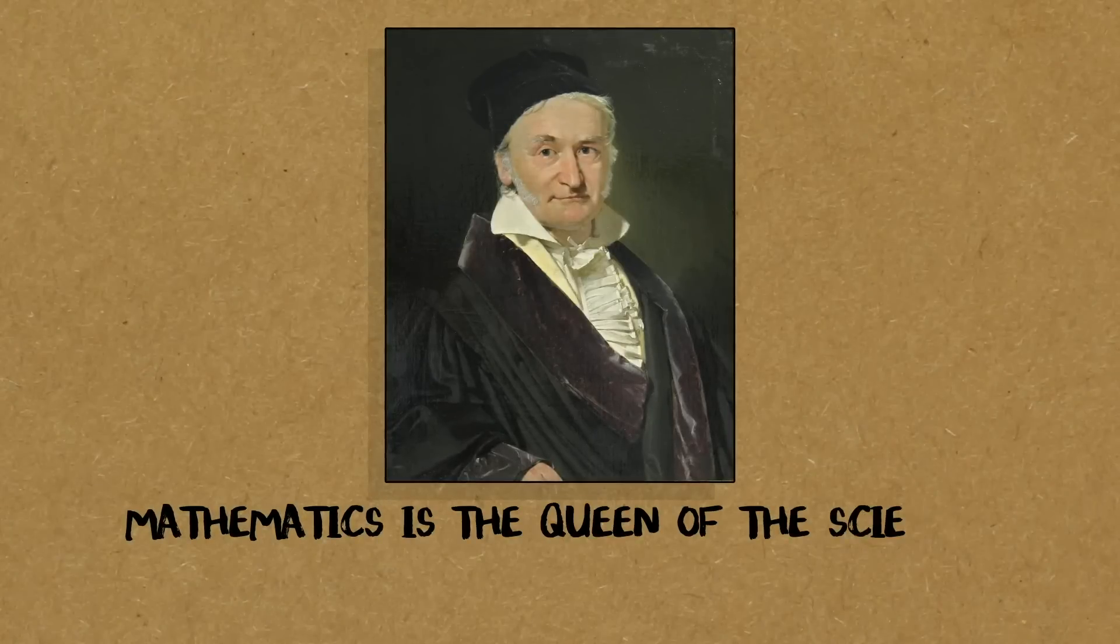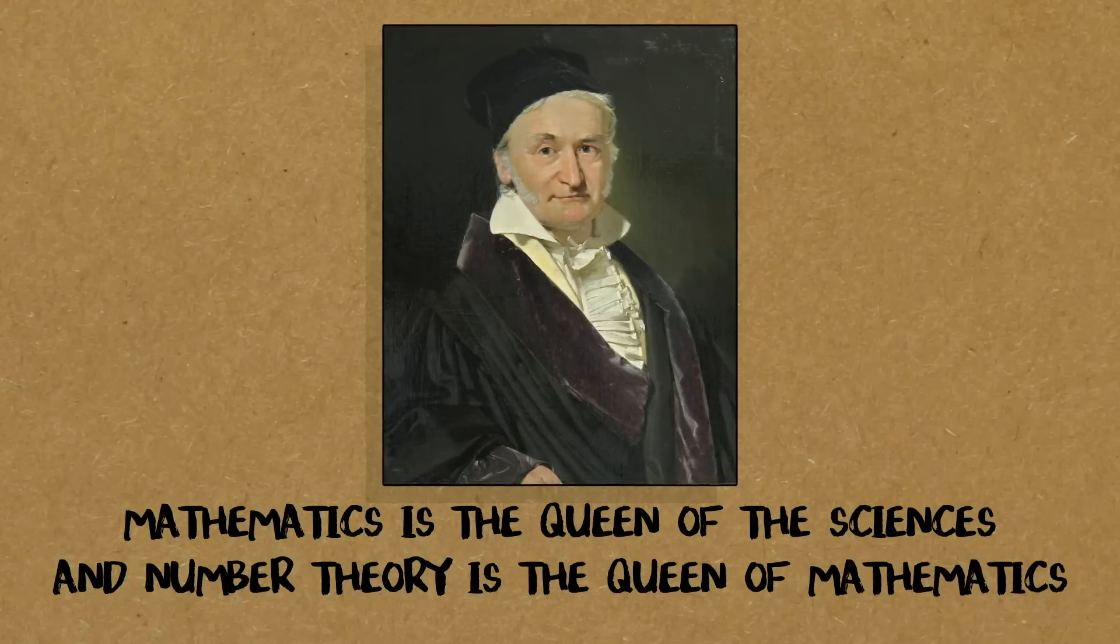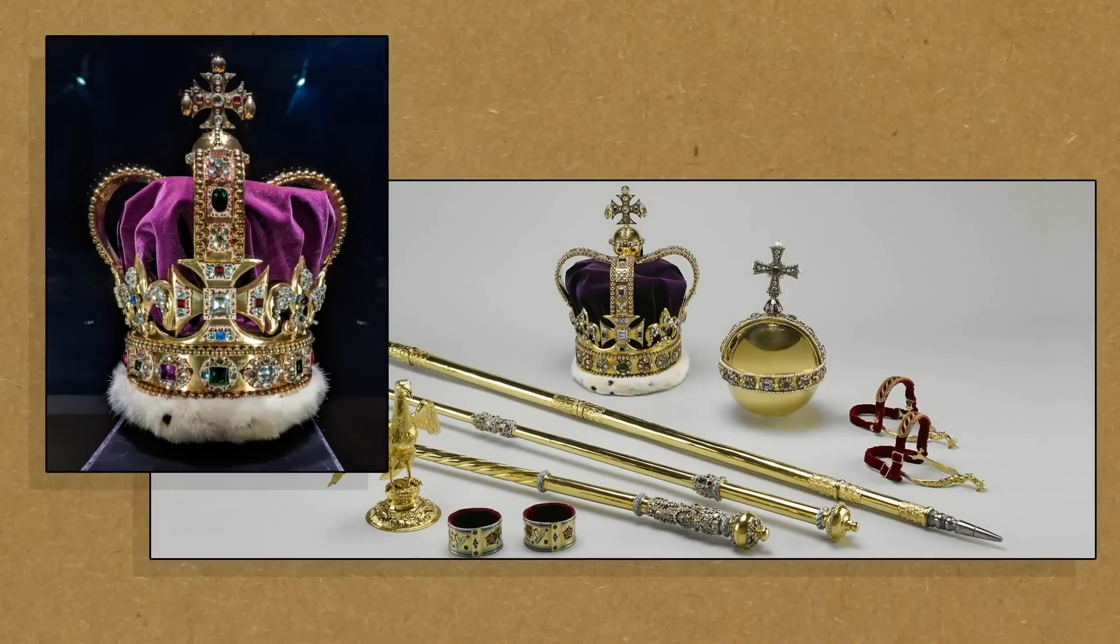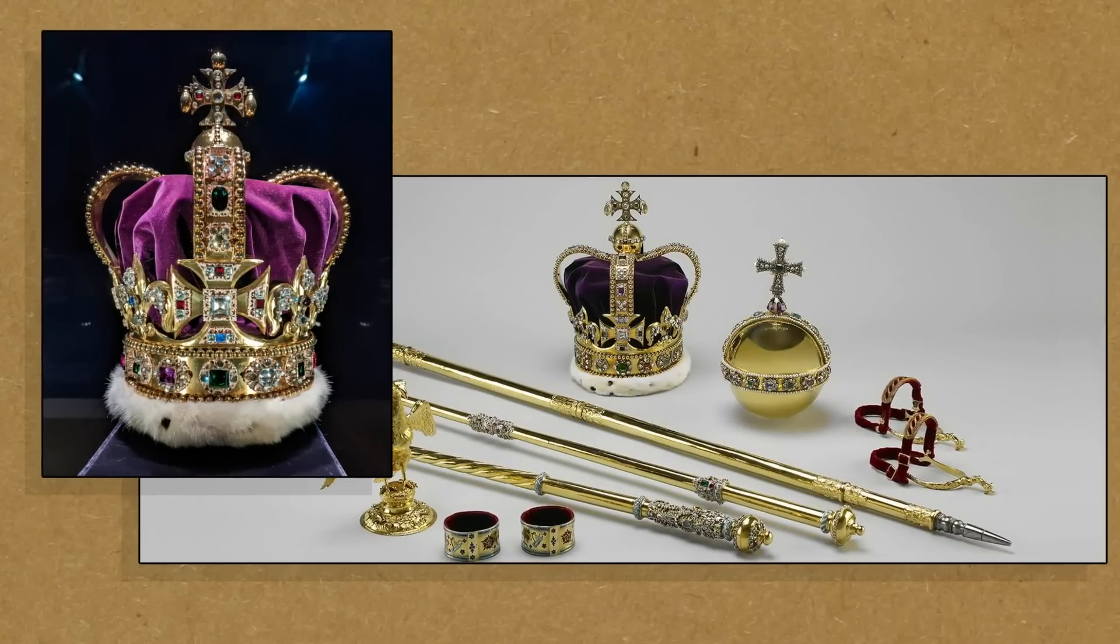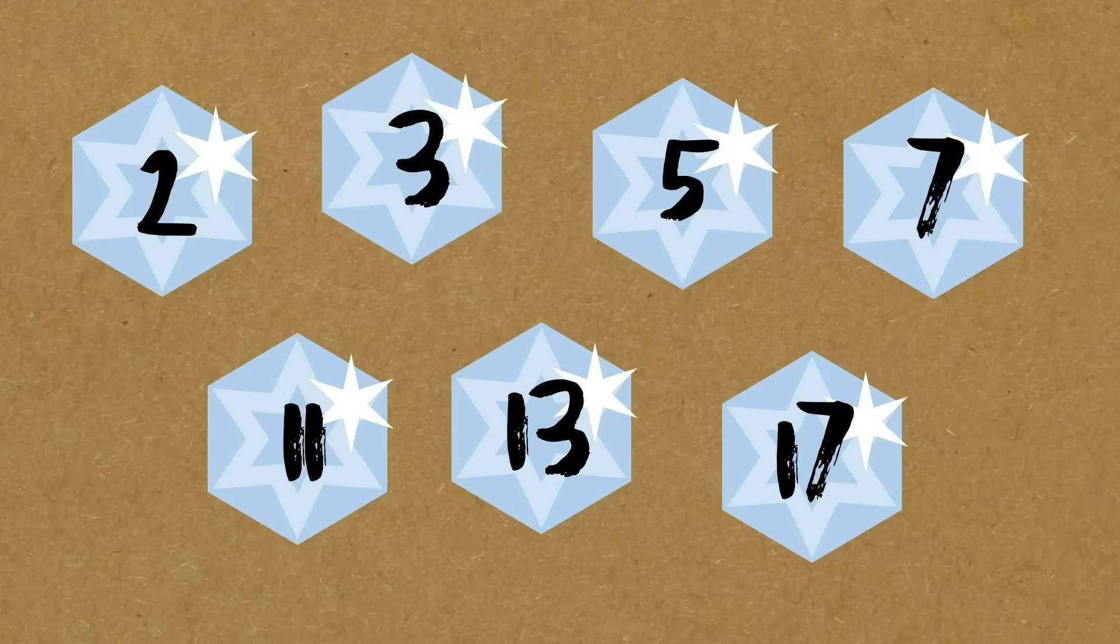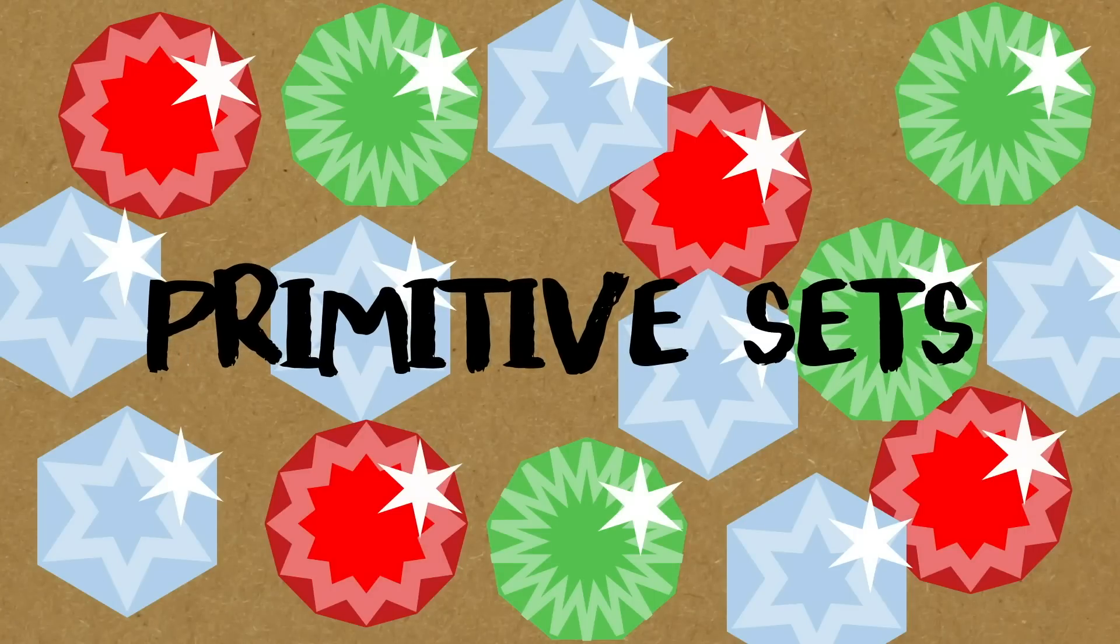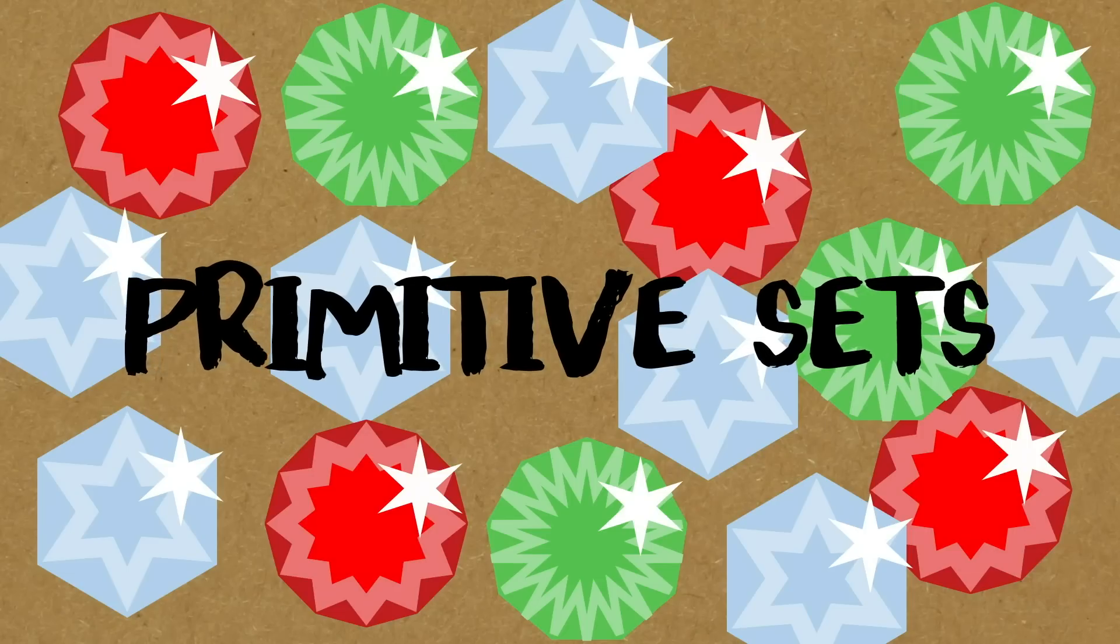Before we get into primitive sets, I wanted to start with a nice quote of Gauss that I always love. Mathematics is the queen of the sciences, and number theory is the queen of mathematics. Let me see if an analogy will hit with you. We have the queen here in England, and her majesty has the crown jewels - these beautiful diamonds.